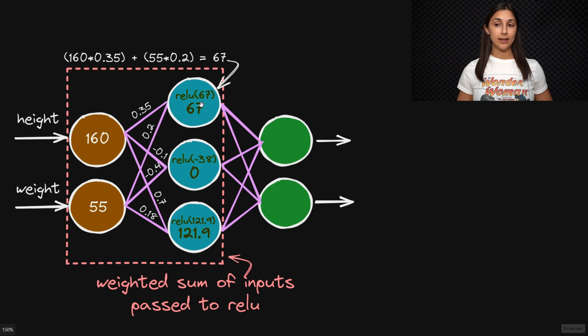And this is considered the pre-activated output from this node. Now after calculating this weighted sum, we then pass it as input to an activation function. The activation function will then give us the activated output from this node, which will then be sent as the final output from this layer. This is what will be passed as input to the following layer.